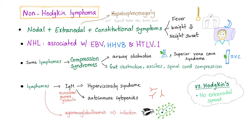Non-Hodgkin's lymphoma is nodal plus extra-nodal. Extra-nodal sites include liver, spleen, GIT, thyroid, testes, skin, brain, and rarely bone — but don't forget bone, because non-Hodgkin's lymphoma can have a leukemic phase. Constitutional symptoms or B symptoms include fever, weight loss, and night sweats. Some lymphomas cause compression syndrome. Some have IgM leading to hyperviscosity or autoimmune cytopenia. Others have agammaglobulinemia leading to infections.